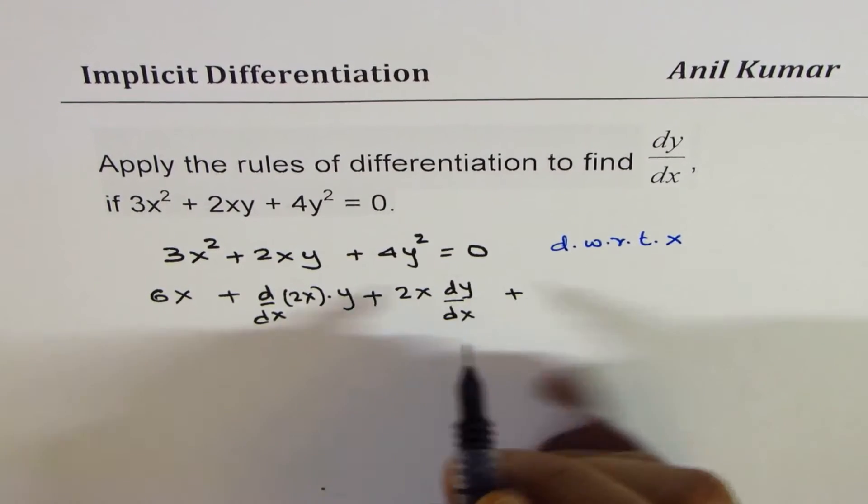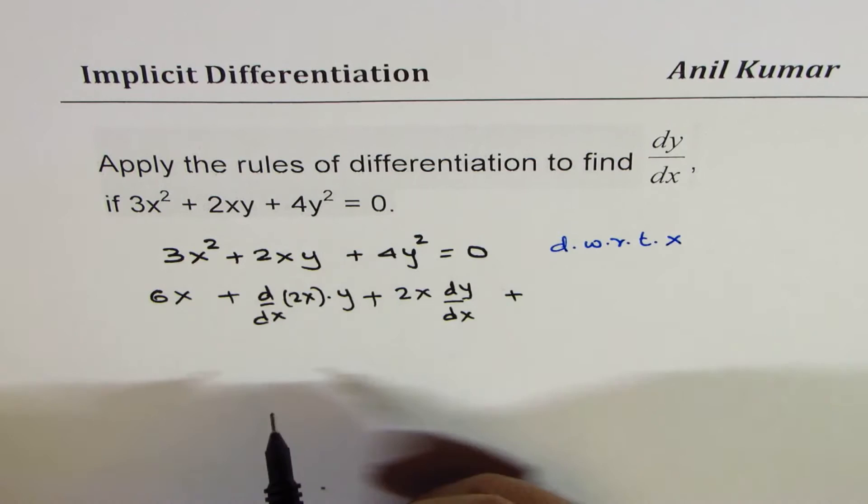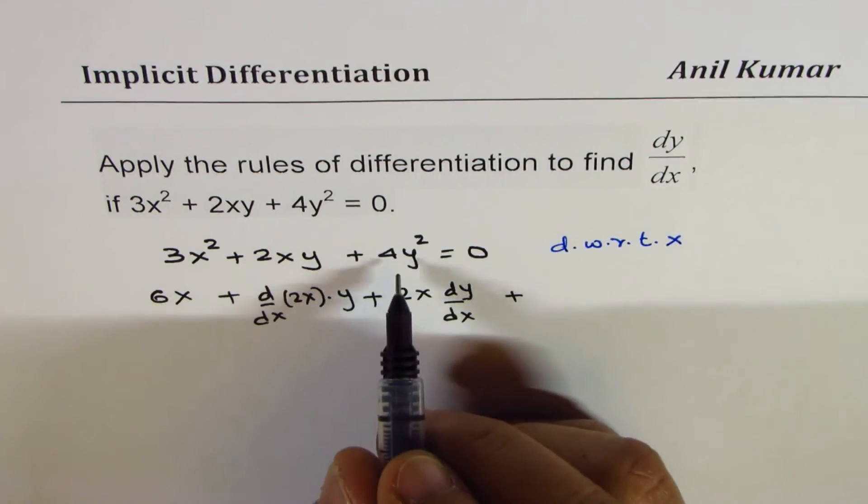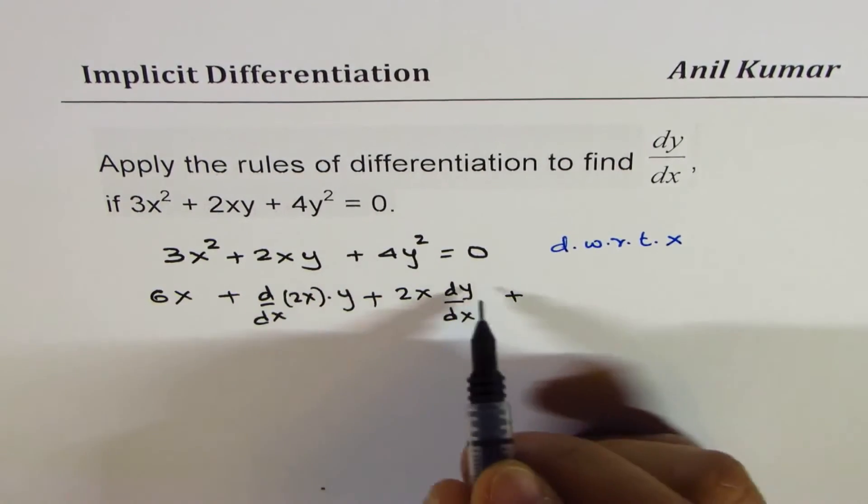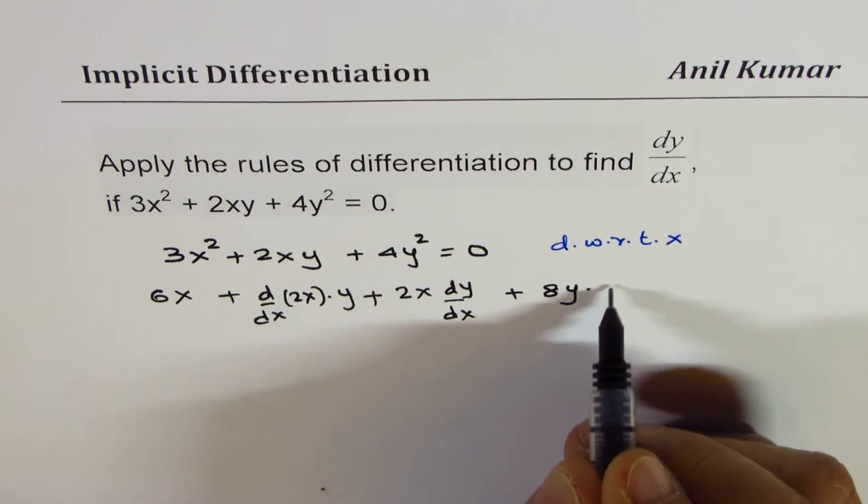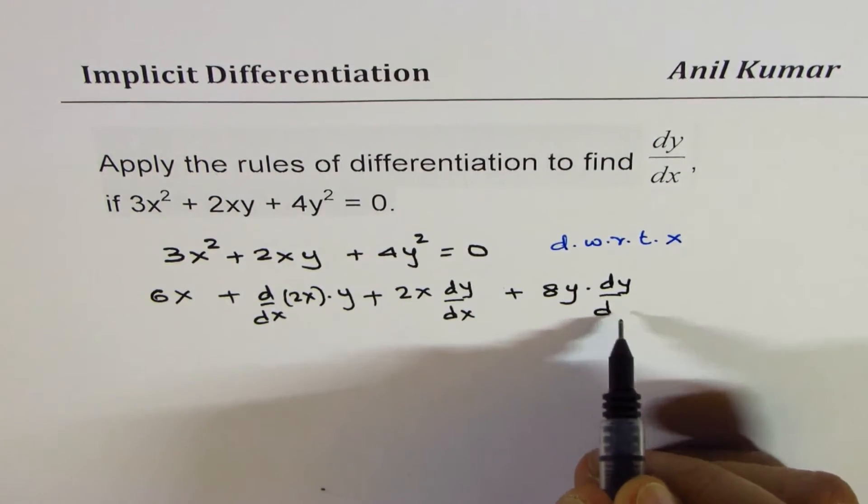The next one, 4y squared. Now 4y squared, you could differentiate using the chain rule. So you can say 4y squared is 8y and then you get dy/dx.